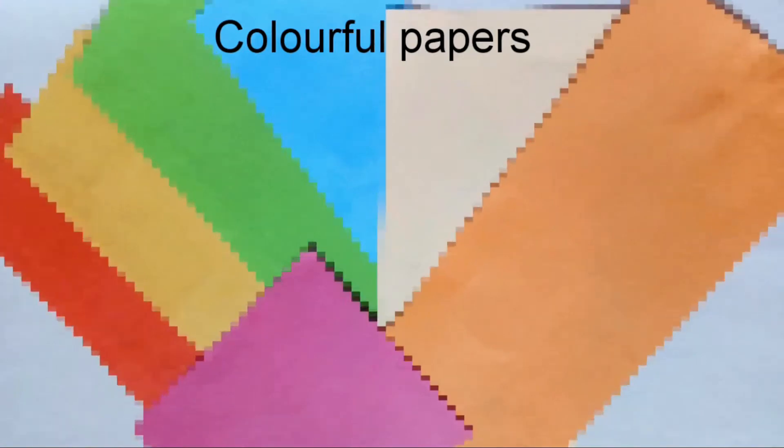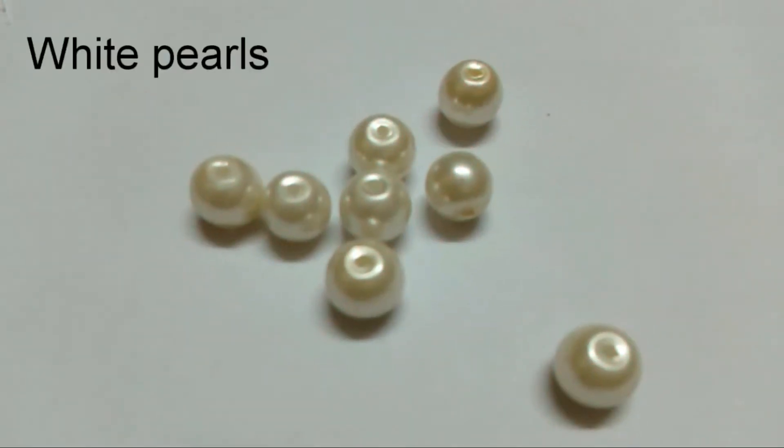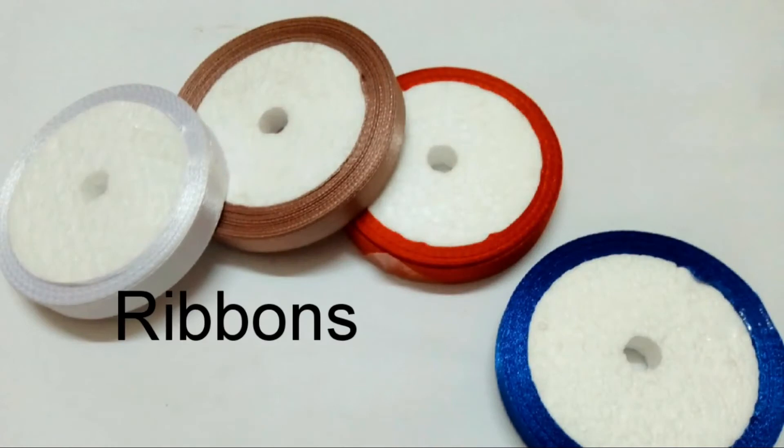Colorful pages that will be our main structure, hot glue gun to stick things with each other, white pearls for decoration, and ribbons to make a bow.